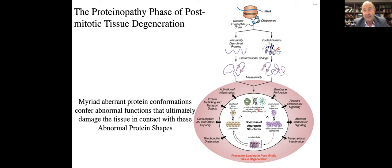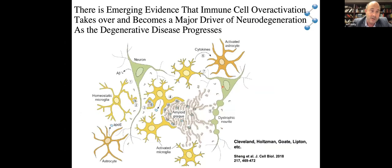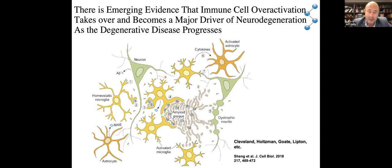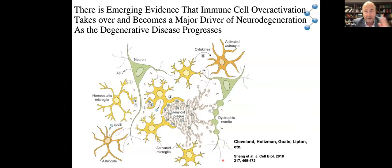Many cellular activities are aberrantly activated because you express all these different protein shapes that the organism doesn't normally see. With time, that leads to cell death. There's emerging evidence that immune cell overactivation — which initially is beneficial — becomes a significant driver of neurodegenerative disease as the disease progresses. Aggregates in the extracellular space, along with other stimuli, activate microglial cells and macrophages. Once hyperactivated, not only do they take out offensive material, they can also eat synapses and ultimately kill neurons.